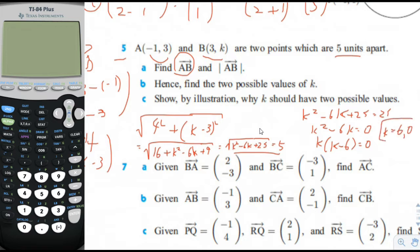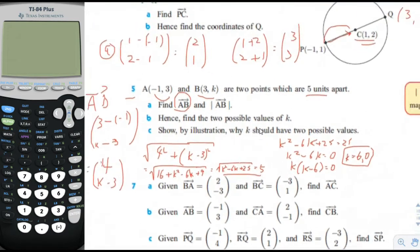Show by illustration why K should have two possible values. If we draw point A, it would be at negative 1 comma 3. And B is somewhere at 1, 2, 3. So one of the possible points is there, which is 3 comma 0. And the other one is 3 comma 6, which would be 1, 2, 3, right here. That shows you that if we're saying that the X coordinate is going to be 3, this point is 5 units away, and this point is 5 units away. They're both 5 units away. So that's why K can have two possible values.